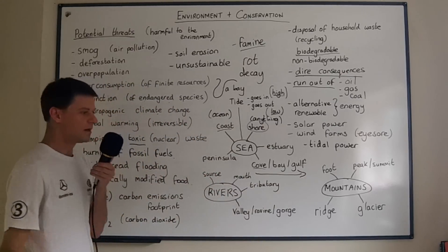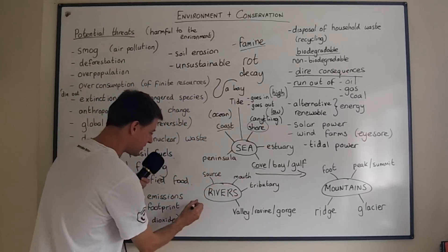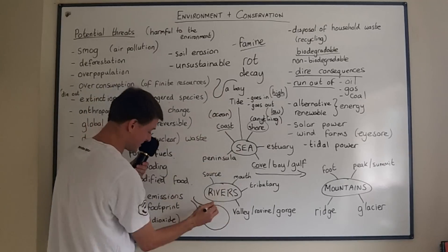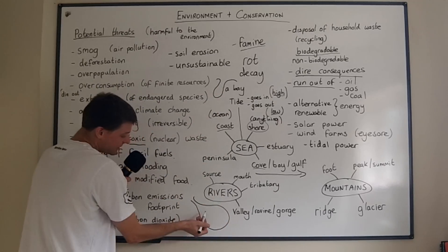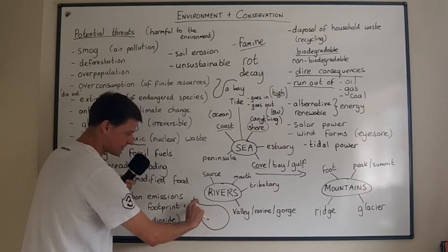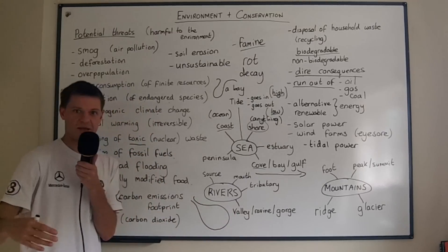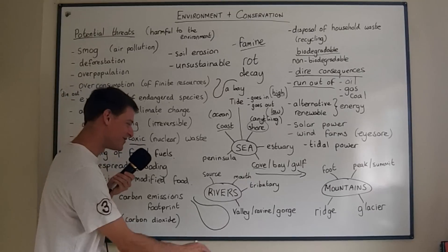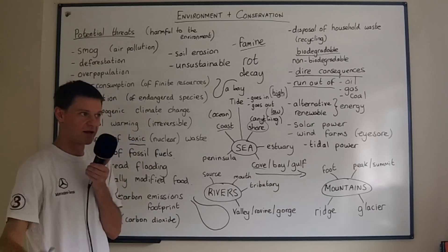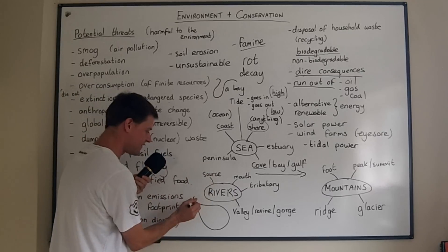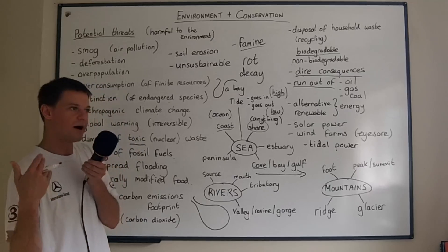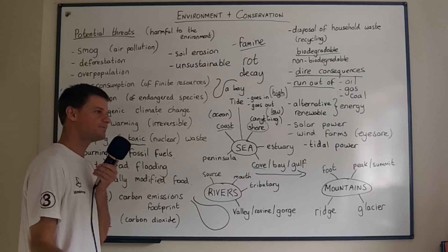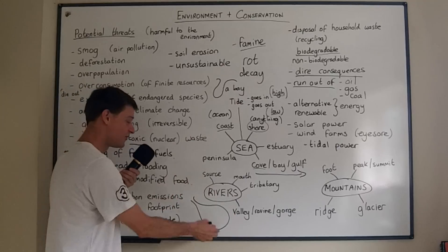A peninsula means almost an island — it's a piece of land that juts out, connected to the mainland by a very thin strip. Greece has a famous peninsula at the bottom of the country — I believe it was once called Sparta. Other famous peninsulas include the Crimea and that part of Greece.